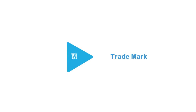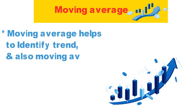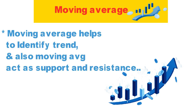Hi guys, this is Shiva, welcome to Trademark. In this session we will understand a very important indicator — moving average. Moving average helps us identify the trend of a stock, and also acts as support and resistance. Other indicators like MACD and Bollinger Bands also use moving average, which means there is something special in it.